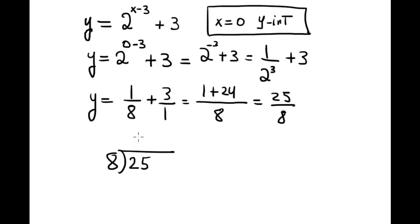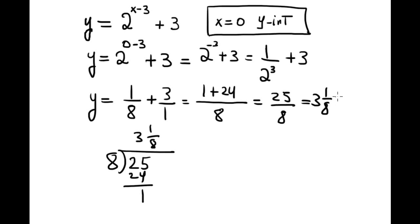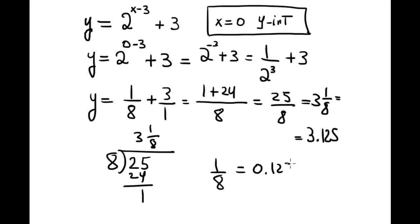25 over 8: dividing gives 3 with a remainder of 1, so it's 3 and 1/8, which is equivalent to 3.125 as a decimal — since 1/8 equals 0.125.